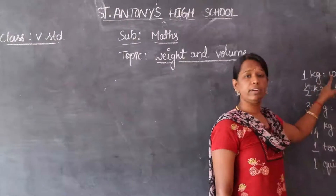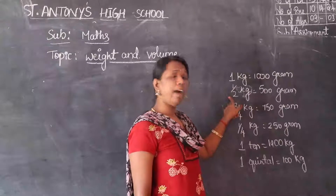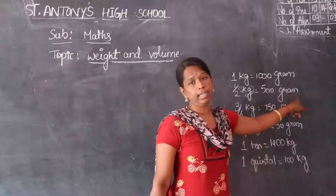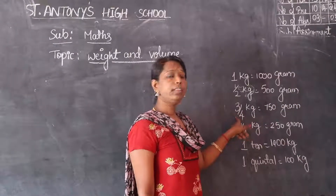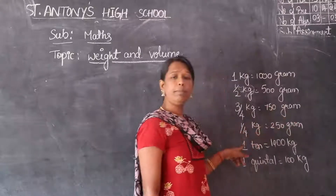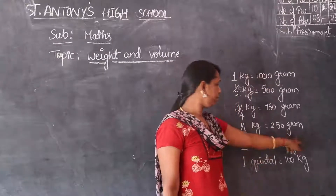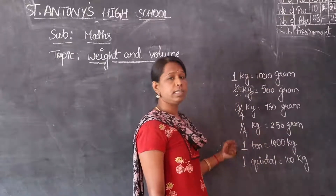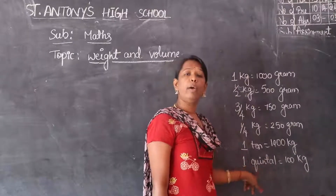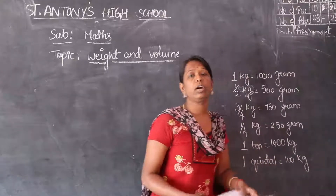We know that 1 kg is equal to 1000 grams. Half kg — if you buy half kg of sugar, they will measure it as 500 grams. 3/4 kg is equal to 750 grams. 1/4, that is quarter of 1000 grams, is 250 grams. The next measurement after 1 kg is 1 quintal. 1 quintal is equal to 100 kg.